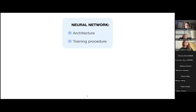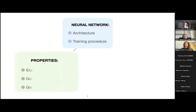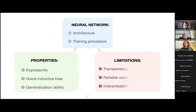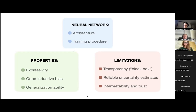We need to define both the architecture of the neural network — which can include convolutional, residual layers, etc. — and the training procedure, i.e., how to update the weights. This gives nice properties such as expressivity and good generalization ability. However, there are limitations: neural networks are still considered a black box, and they don't provide reliable uncertainty estimates, which is very important in applications like medical diagnosis and self-driving cars.